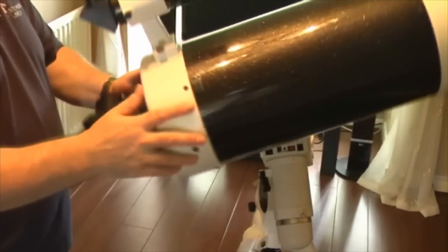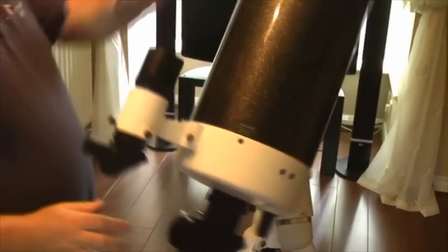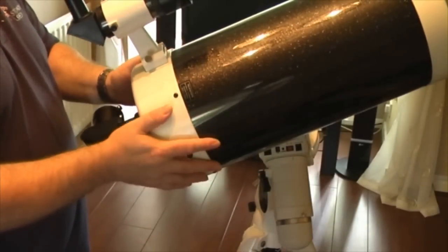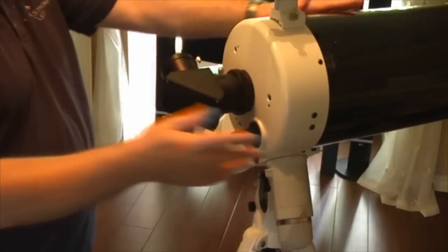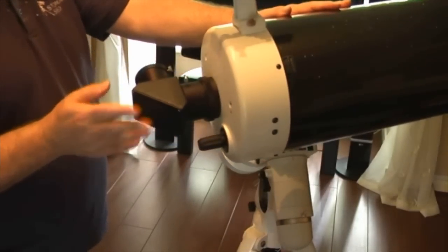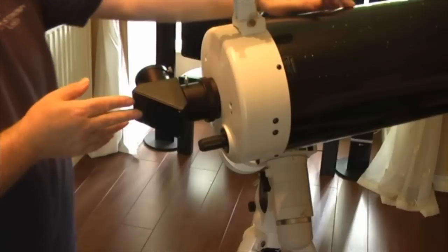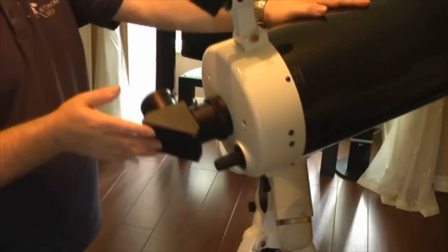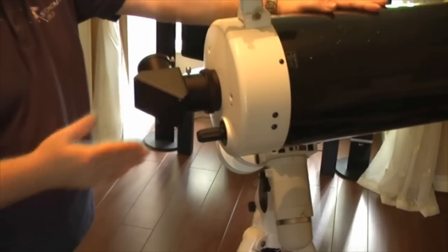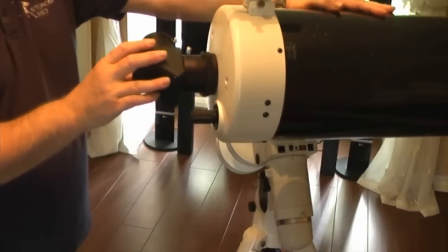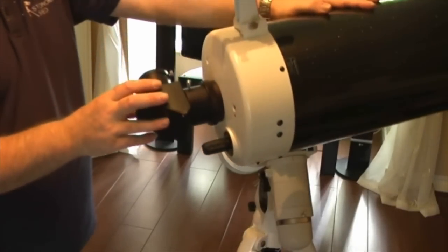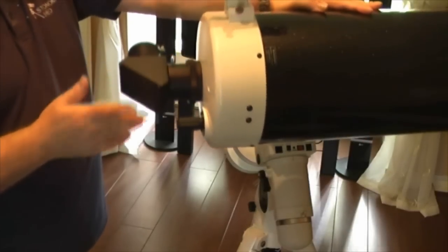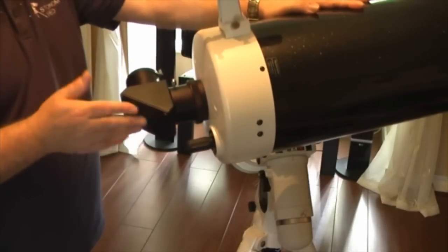On to a brief review of this particular model, the Skywatcher 180. One thing I don't like about it, well actually there are two, the first thing is the quality of the diagonal on the Skymax 180 isn't very good at all. I found that if I took the diagonal off my ED80 scope which is also a two inch diagonal and fitted that on, it actually increased the views quite a lot there was a marked difference. So I think that Skywatcher really need to add a better quality diagonal to the Mac 180.